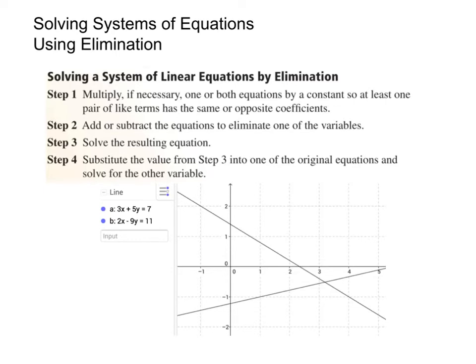This third method is called elimination, and it has four basic steps. The first step is to multiply, if necessary, one or both equations by a constant, so at least one pair of like terms has the same or opposite coefficients. It might not make a lot of sense right now, but when you see a couple of examples, it'll become a lot more clear. The next step is to add or subtract the equations to eliminate one of the variables — that's where we get the name elimination. The decision to add or subtract is based on step one: if the like terms have the same coefficients, we'll subtract; if opposite, we'll add.